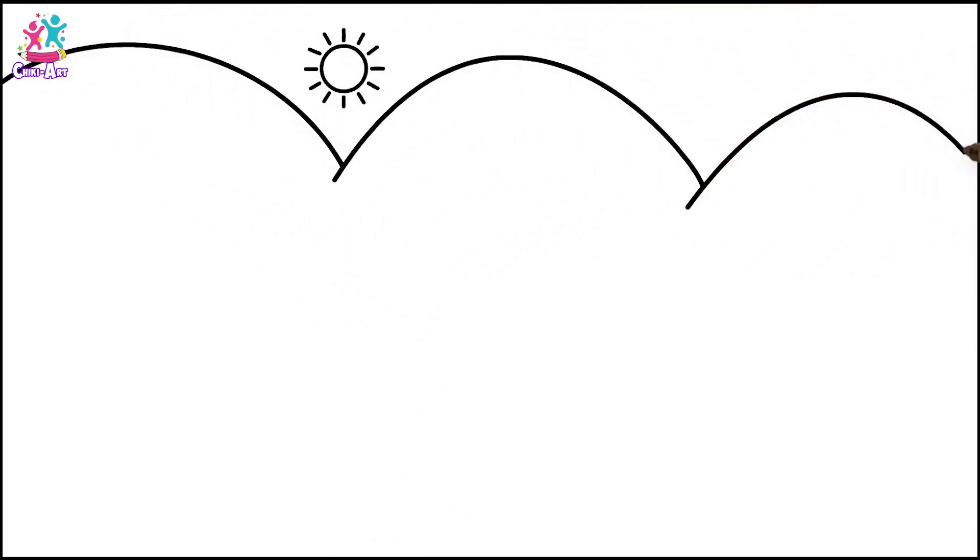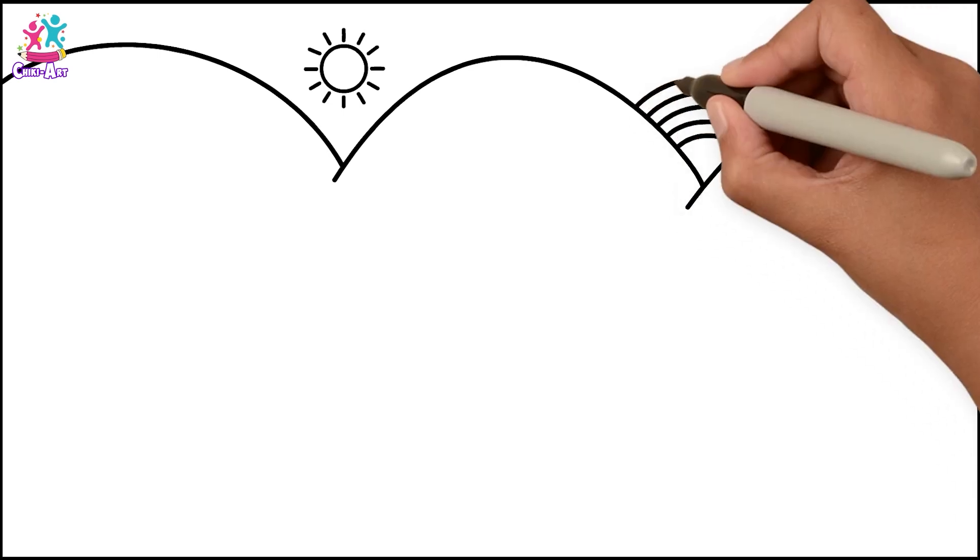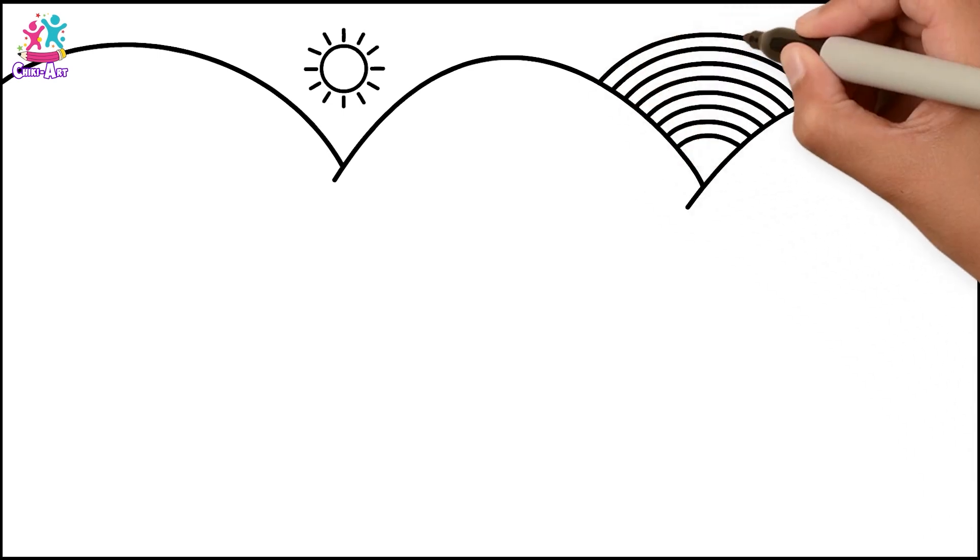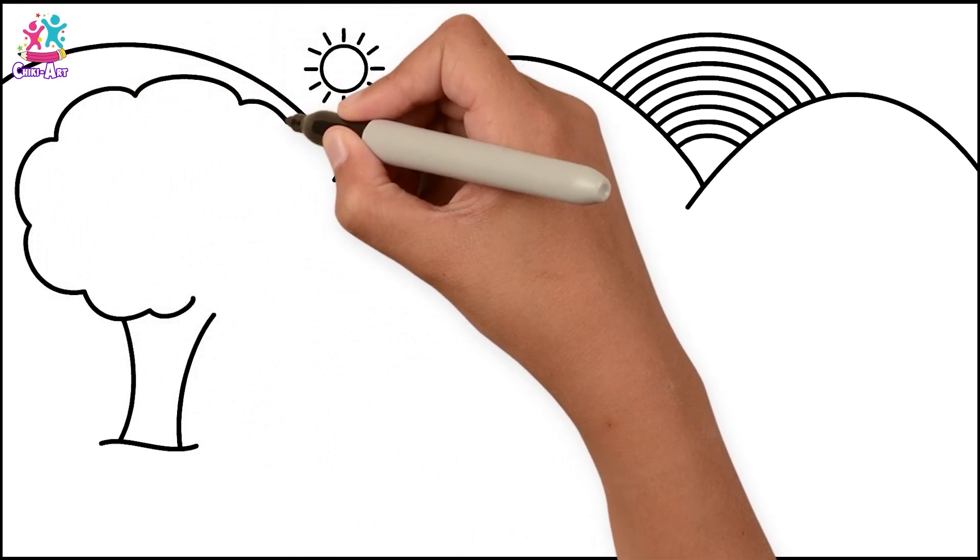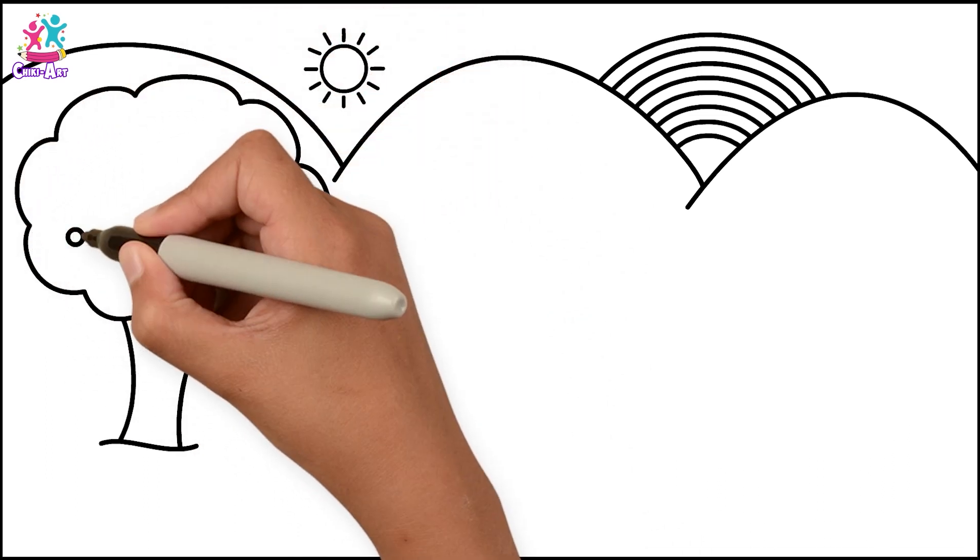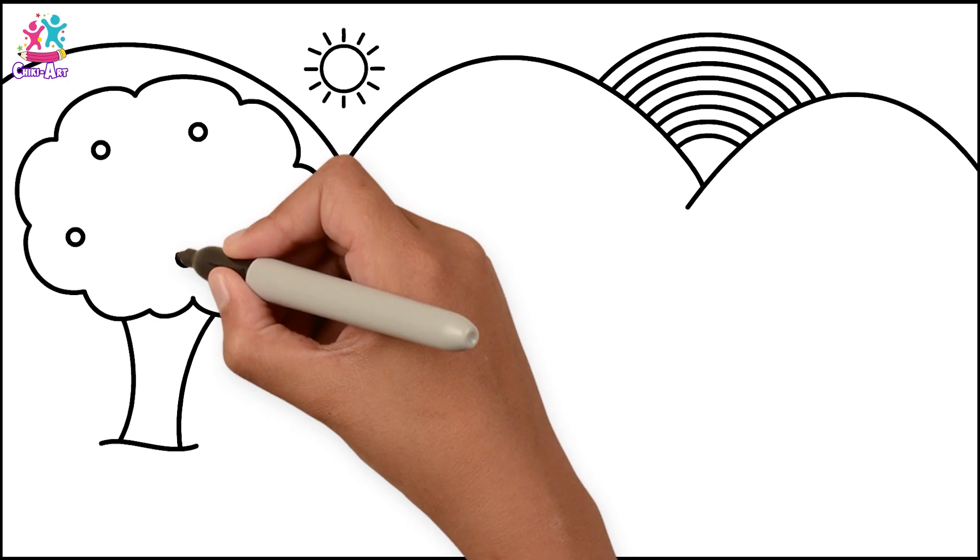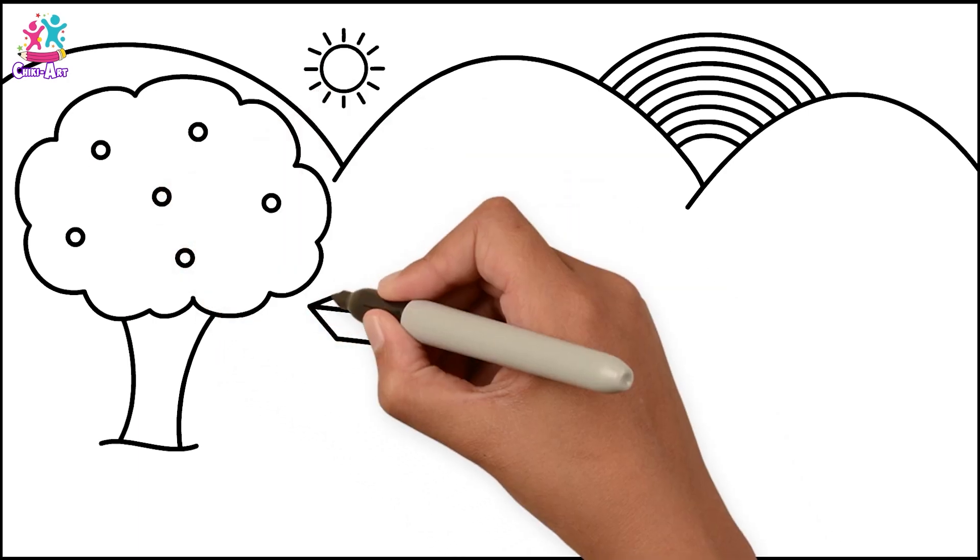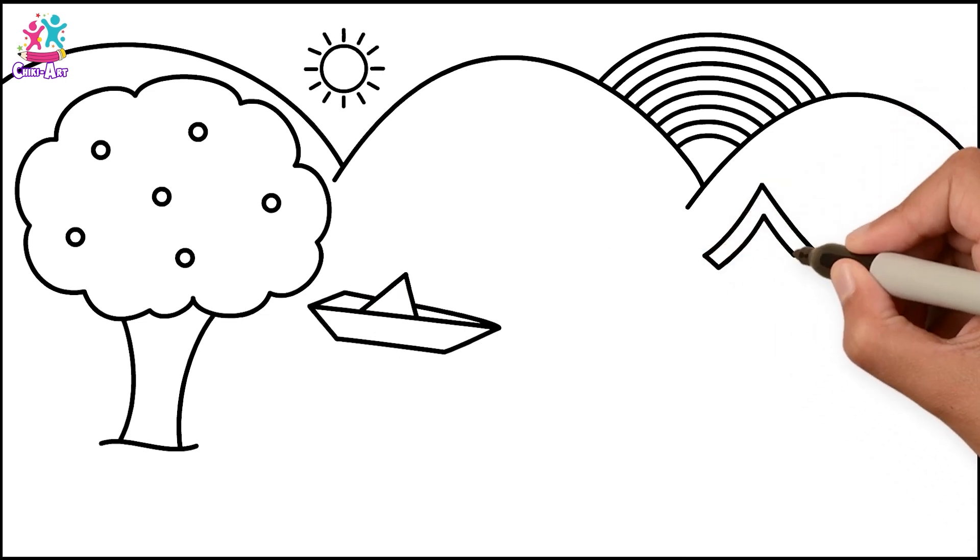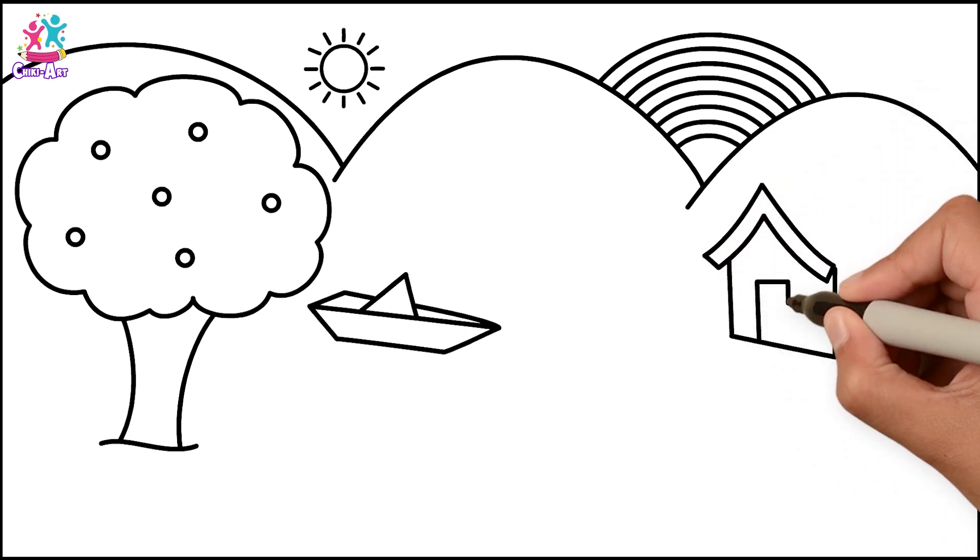Now some curvy lines for hills and a rainbow in between two of them. Let's do a tree. How about some fruit in the tree? Just some little circles. A boat and a house with a triangle roof, a rectangle door.